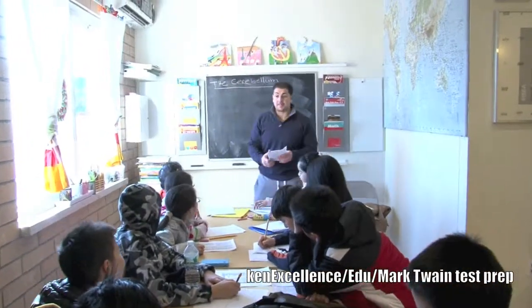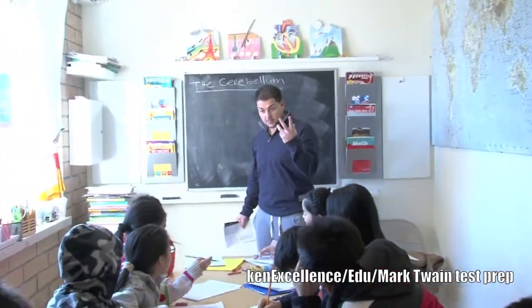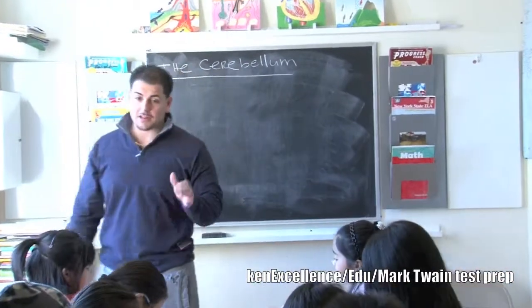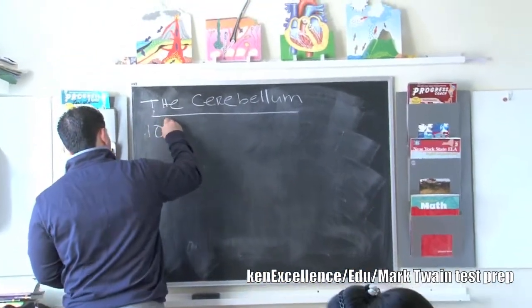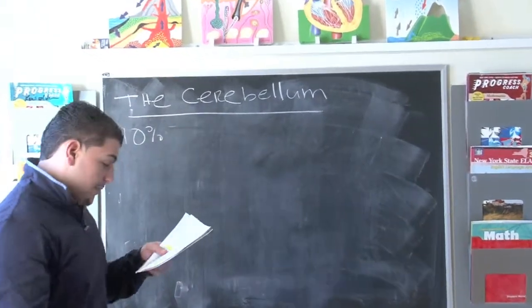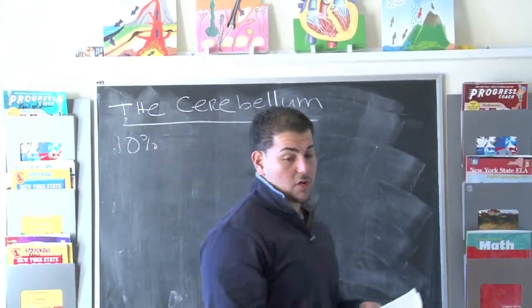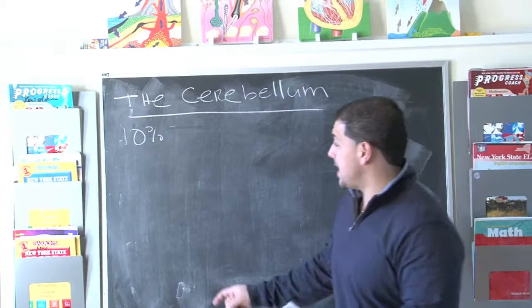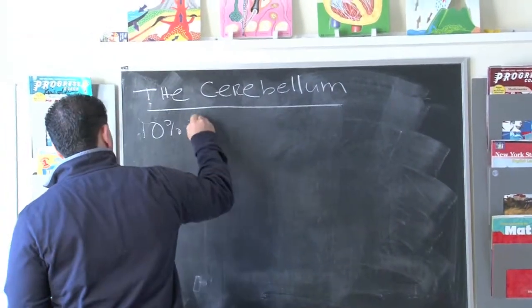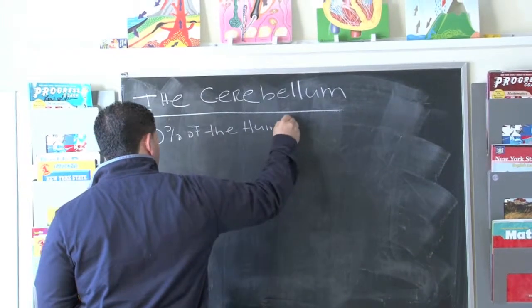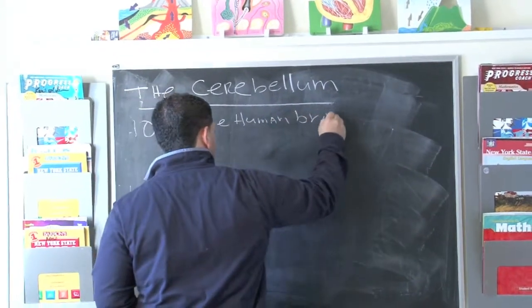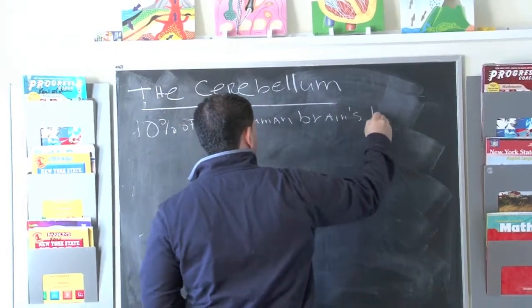Let's talk about the other part of the brain. It's called a cerebellum. Everybody say cerebellum. Now right off the bat, it's responsible for only 10% of what happens in the brain. It makes up about 10% of the human brain's total volume.